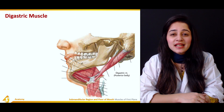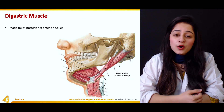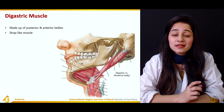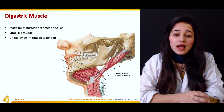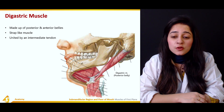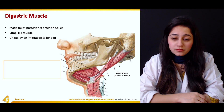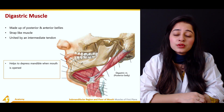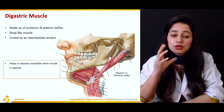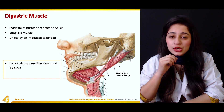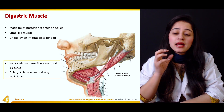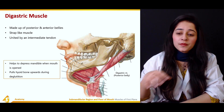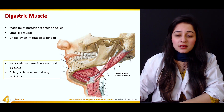The digastric muscle is made up of the posterior and anterior bellies. It is a strap-like muscle united by an intermediate tendon. It helps to depress the mandible when the mouth is open, and pulls the hyoid bone upward during deglutition.